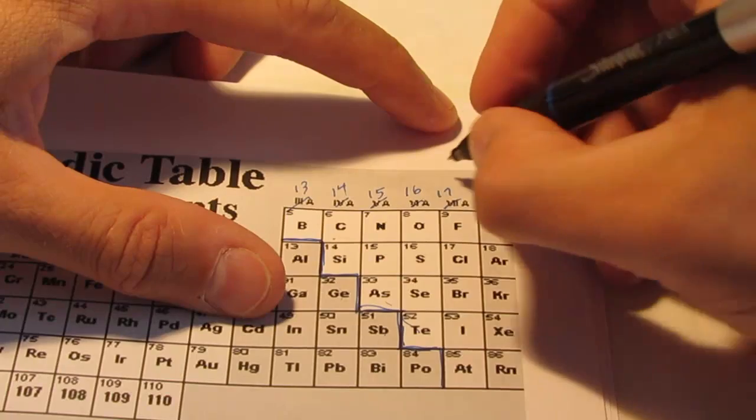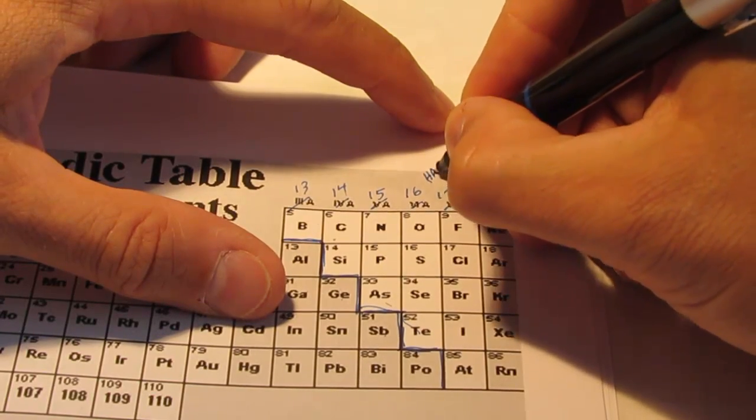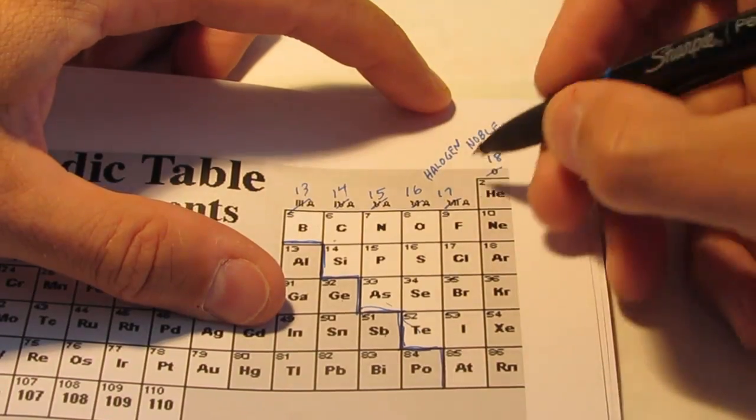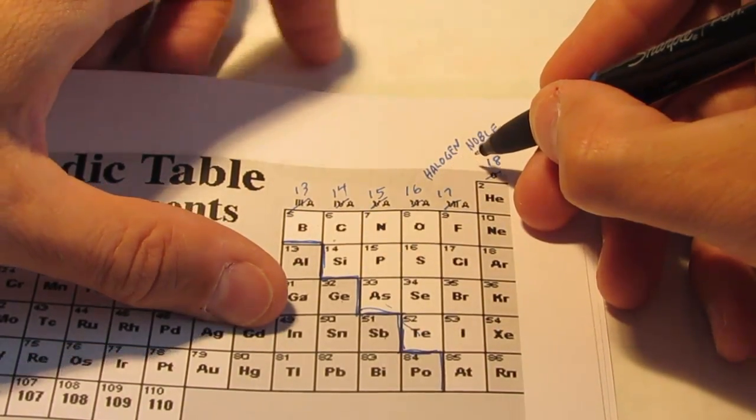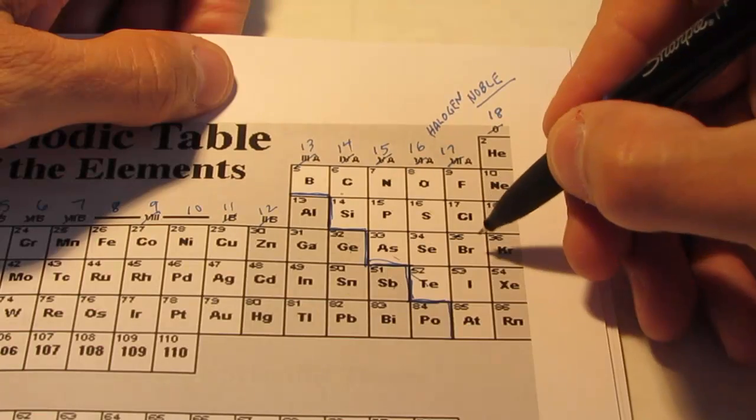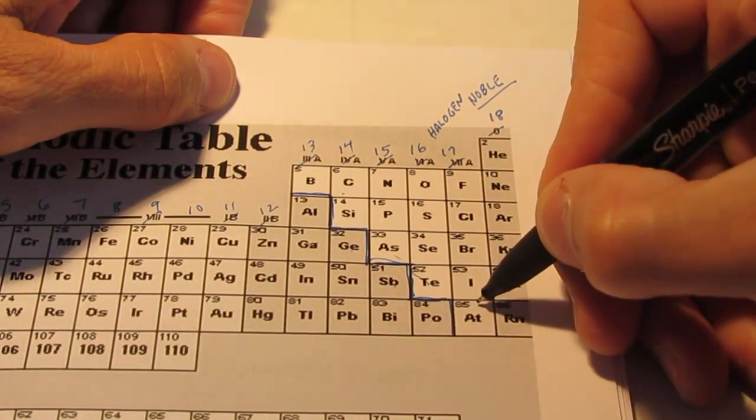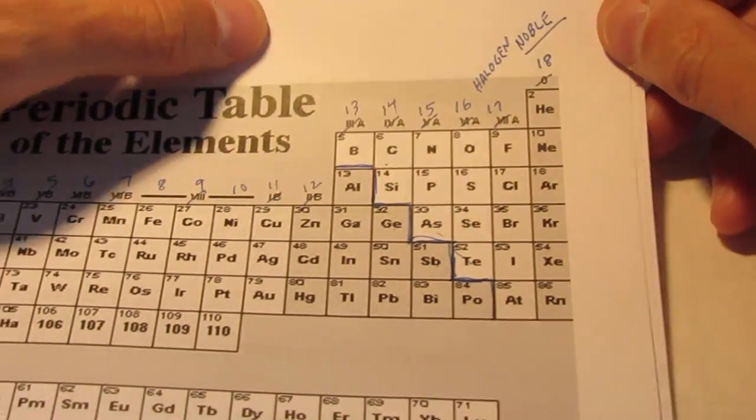Group 17 contains a group called the halogens. The halogens. Now, that includes fluorine, chlorine, bromine, iodine, and astatine. Those are the halogens. And that's just a common name for group 17.